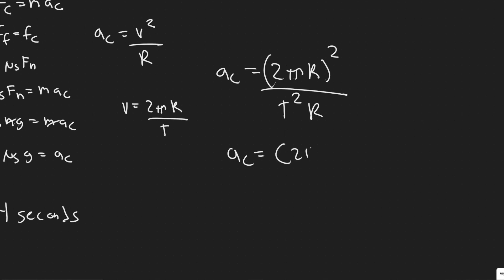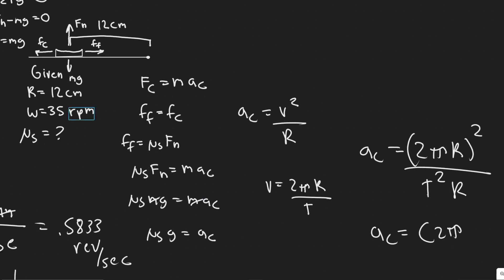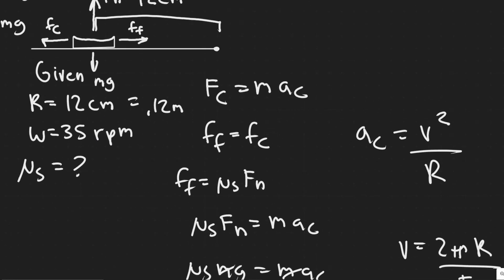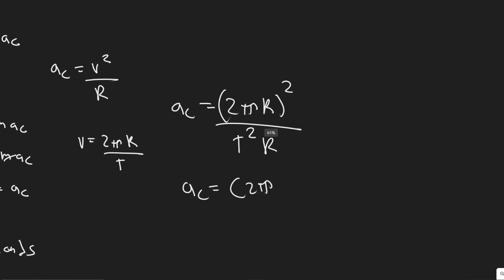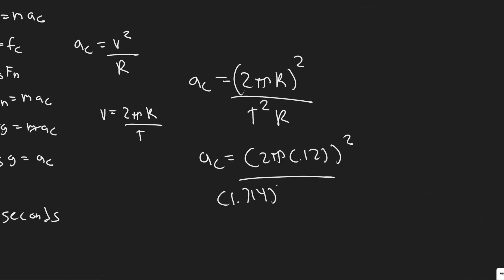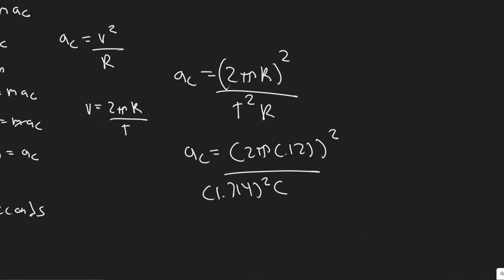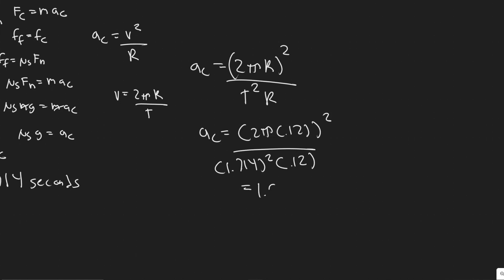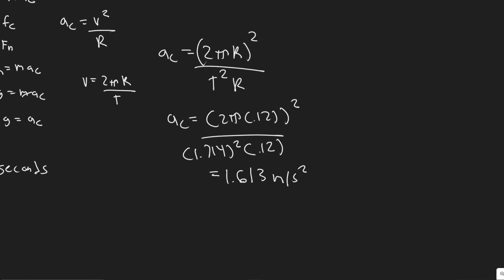Now we plug in the values. A_c equals (2π × 0.12)² divided by (1.714²), then divided by 0.12 — remembering that 12 centimeters equals 0.12 meters. Computing this: 2π times 0.12, squared, divided by 1.714 squared, multiplied by 0.12. You get A_c equals 1.613 meters per second squared.